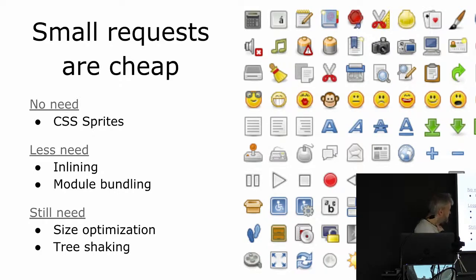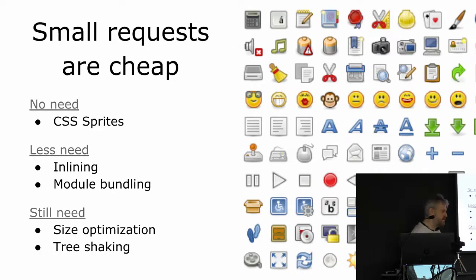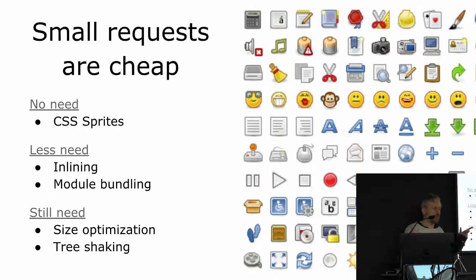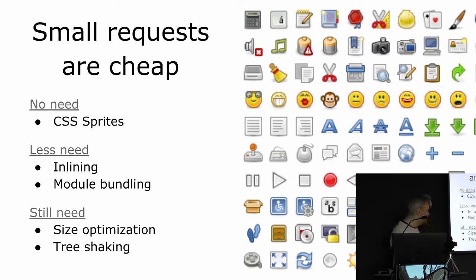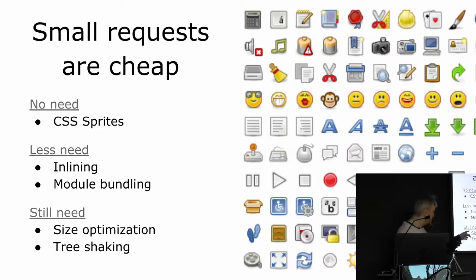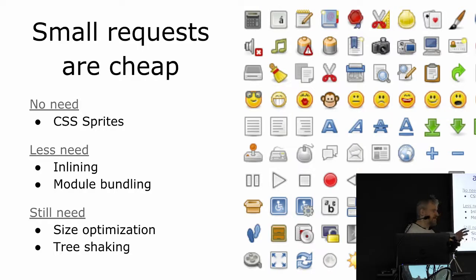There are other things we previously did which have less value but are not completely useless — things like inlining content resources such as JavaScript, CSS, and HTML, and bundling many small JavaScript files into a large one. These are less valuable now because HTTP requests are less costly. But what you still want to do is think about size and code elimination: optimizing image compression, minimizing JavaScript, and using tree-shaking algorithms to remove everything you don't actually need so it's not sent over the wire at all.